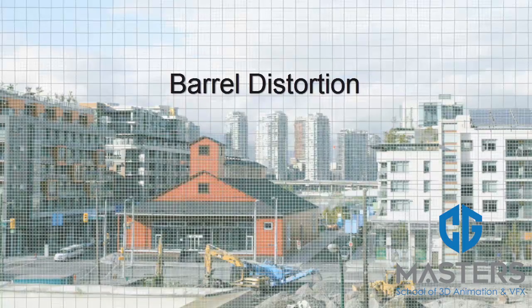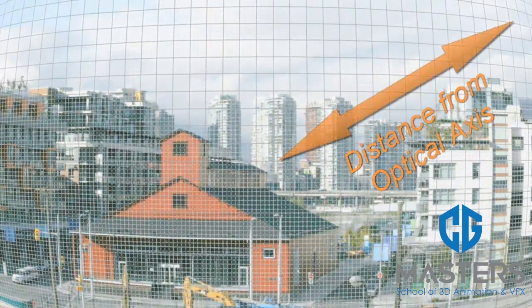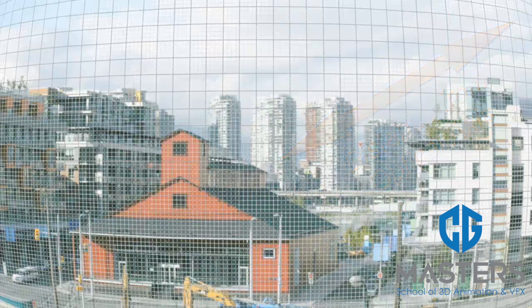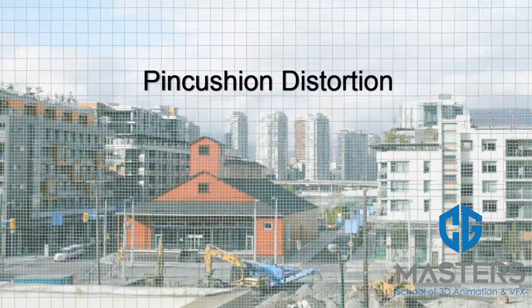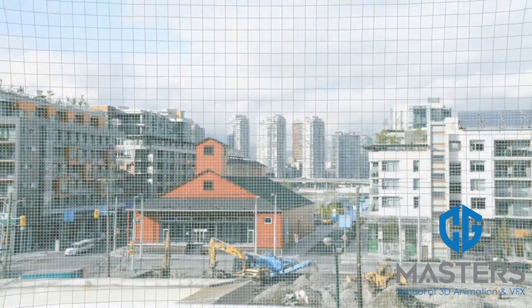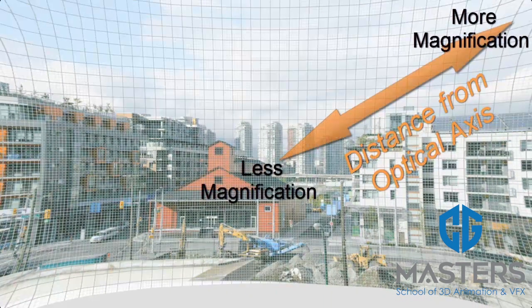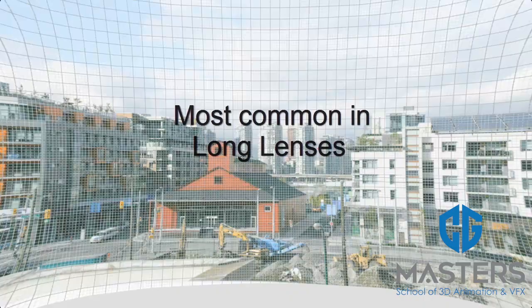Barrel distortion occurs where image magnification decreases with distance from the optical axis. The visible effect is that lines that do not go through the center of the image are bowed inwards, toward the center of the image. This aberration is most commonly seen in long or telephoto lenses.